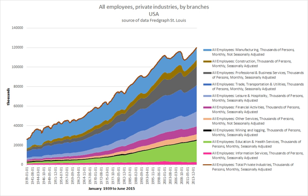In non-union work environments in the United States, unjust termination complaints can be brought to the United States Department of Labor. Labor unions are legally recognized as representatives of workers in many industries in the United States. Their activity today centers on collective bargaining over wages, benefits, and working conditions for their membership, and on representing their members in disputes with management over violations of contract provisions.